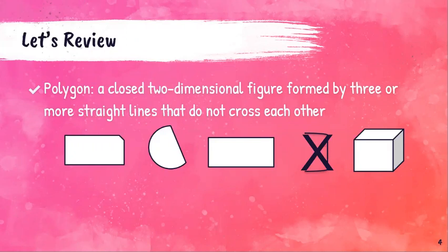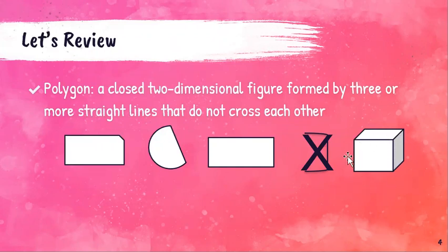The next part of the definition says it's a two-dimensional figure — a closed two-dimensional figure. So what does two-dimensional mean in math terminology? It means that it is a flat shape — it just has two dimensions to measure: length and width. But I've only got two dimensions to measure, as opposed to this cube where I've got length, height, and width — three dimensions to measure. So this cube is not two-dimensional; this is a three-dimensional shape. So this is also not a polygon, and I'm going to put an X on that.